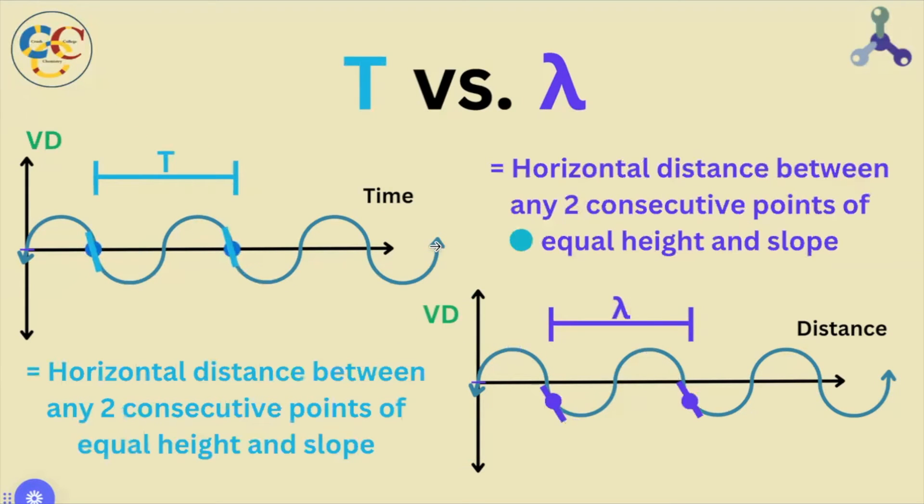Here, we can see that they have identical definitions on the graph, where it's the length between any two consecutive points with equal height and equal slope.